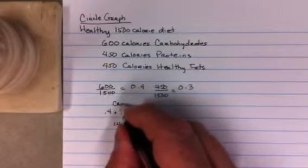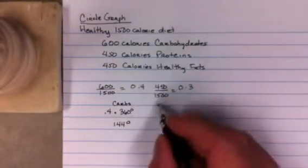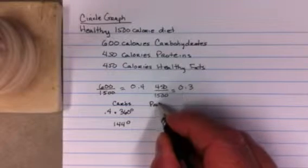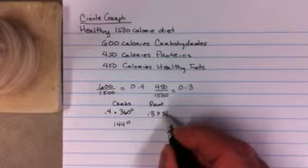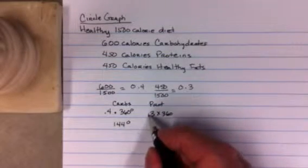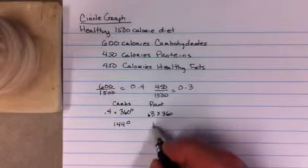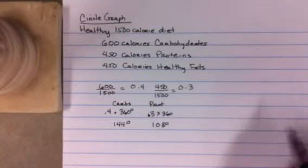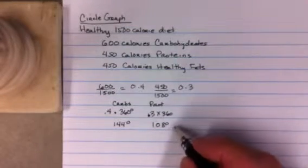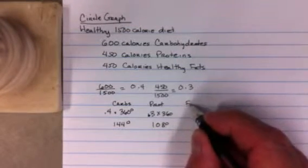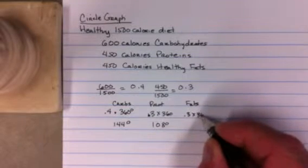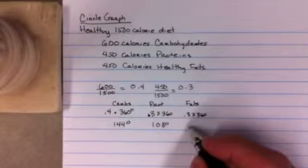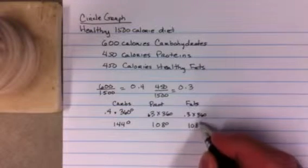This is for the carbs. For the proteins, it's 0.3 times 360. You multiply that out, you get 108 degrees. So 108 degrees of the circle is going to be proteins. And the healthy fats are 0.3 times 360, which turns out to be also 108 degrees.